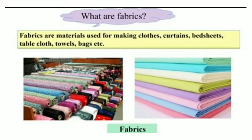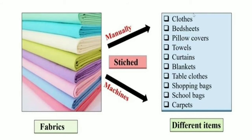Now what do you mean by fabrics? Fabrics are materials used for making clothes, curtains, bedsheets, tablecloth, towels, bags, and etc. These fabrics are either stitched manually or with the help of machines to make different items like clothes, bedsheets, pillowcases, towels, curtains, blankets, tablecloths, shopping bags, school bags, carpets, etc.